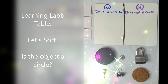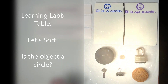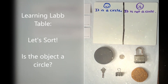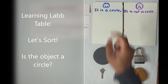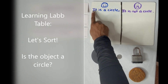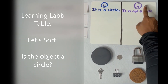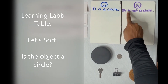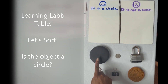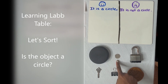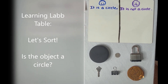Here we are at our learning lab table. I have six objects right here in front of me and we're going to sort them by looking at the sides and corners and telling whether the object is a circle or not. If it is a circle, we're going to place it by the smiley face where it says it is a circle. If the object is not a circle, we're going to place it under the sad face. Let me tell you what our objects are: a top, a quarter, a lock, a key, a clip, and a yummy oatmeal pie.